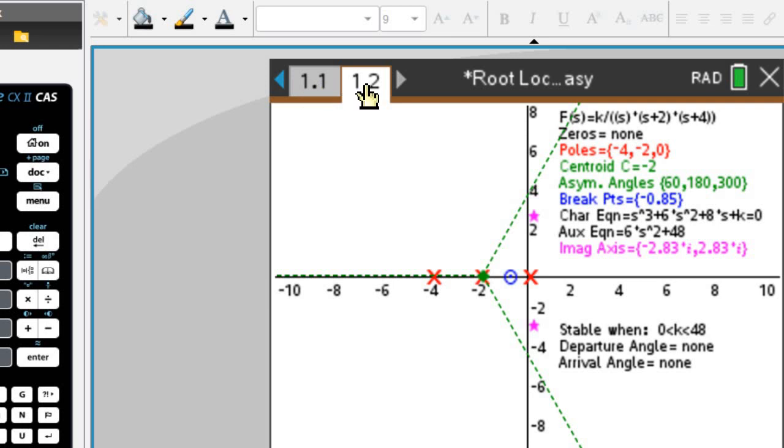you just go from tab 1.1 to tab 1.2. And there you can see, first of all, the summary of all the properties of the root locus.